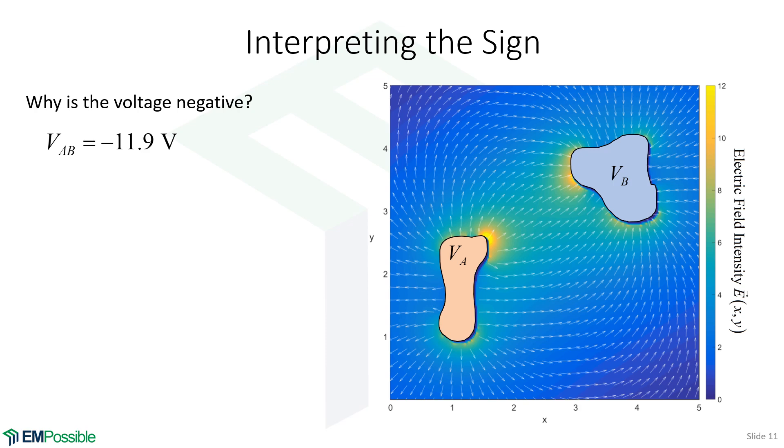Why the negative sign? Remember the definition: it is V_B minus V_A. So we're going to look at the potential here at V_B and subtract the potential here at V_A.